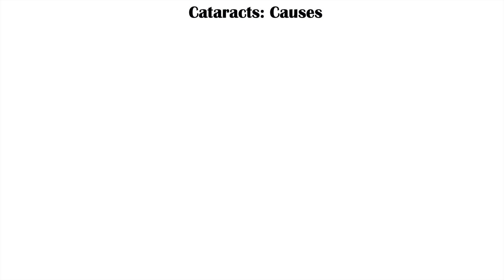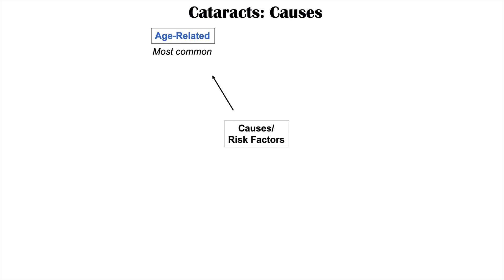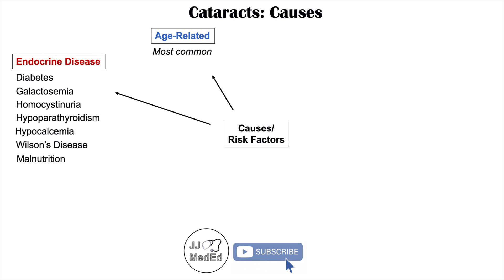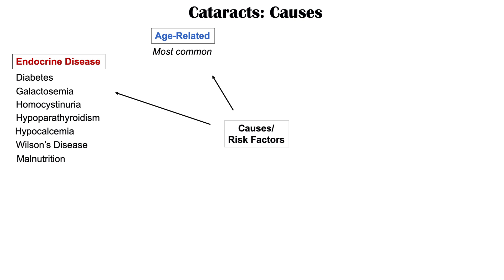There are many different causes of cataracts broken down into several categories. The first main category is age-related, which is the most common cause. The next category is endocrine diseases, including diabetes, galactosemia, homocystinuria, hypoparathyroidism, hypocalcemia, Wilson's disease, and malnutrition — all of which can increase your risk for getting cataracts.